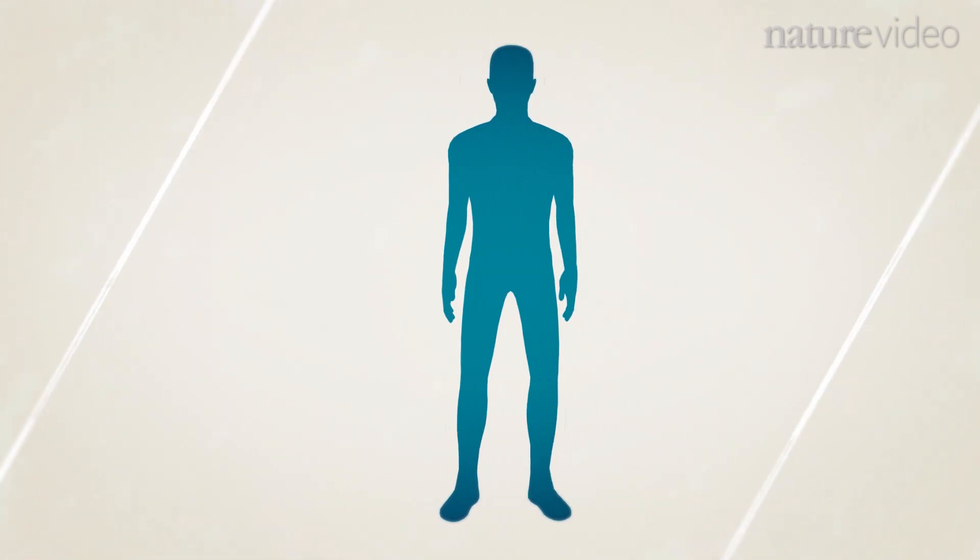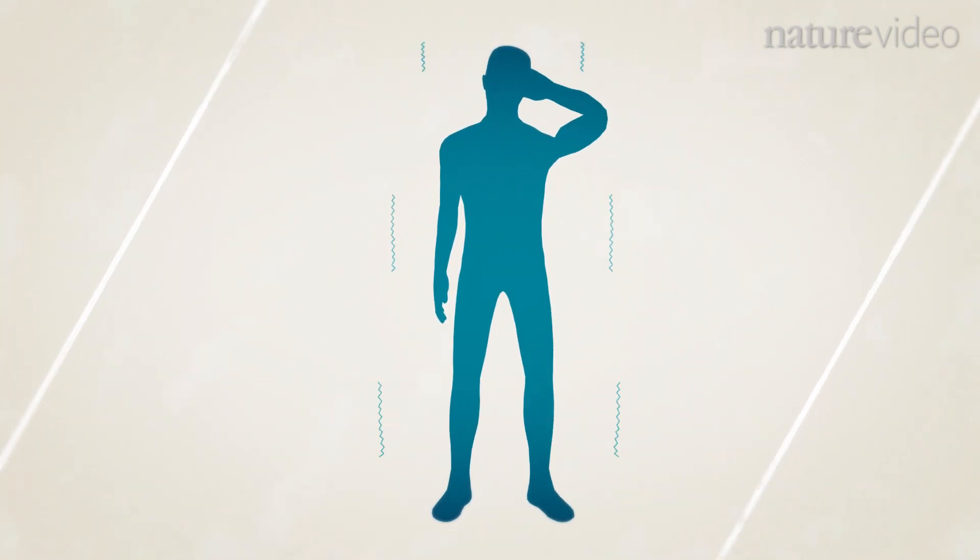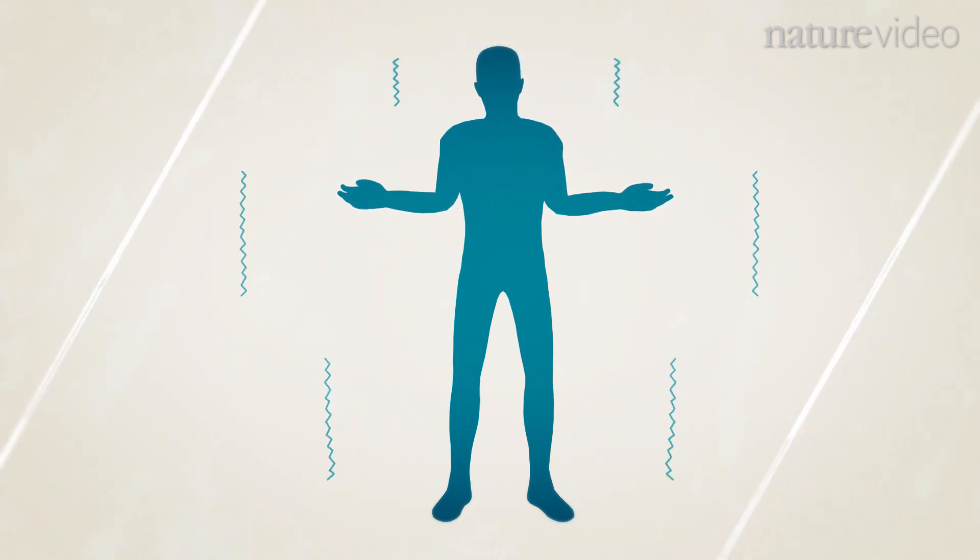Symptoms of Huntington disease typically develop in adulthood and include changes in movement, cognition and behaviour. There is no cure. Current treatments only reduce the symptoms.